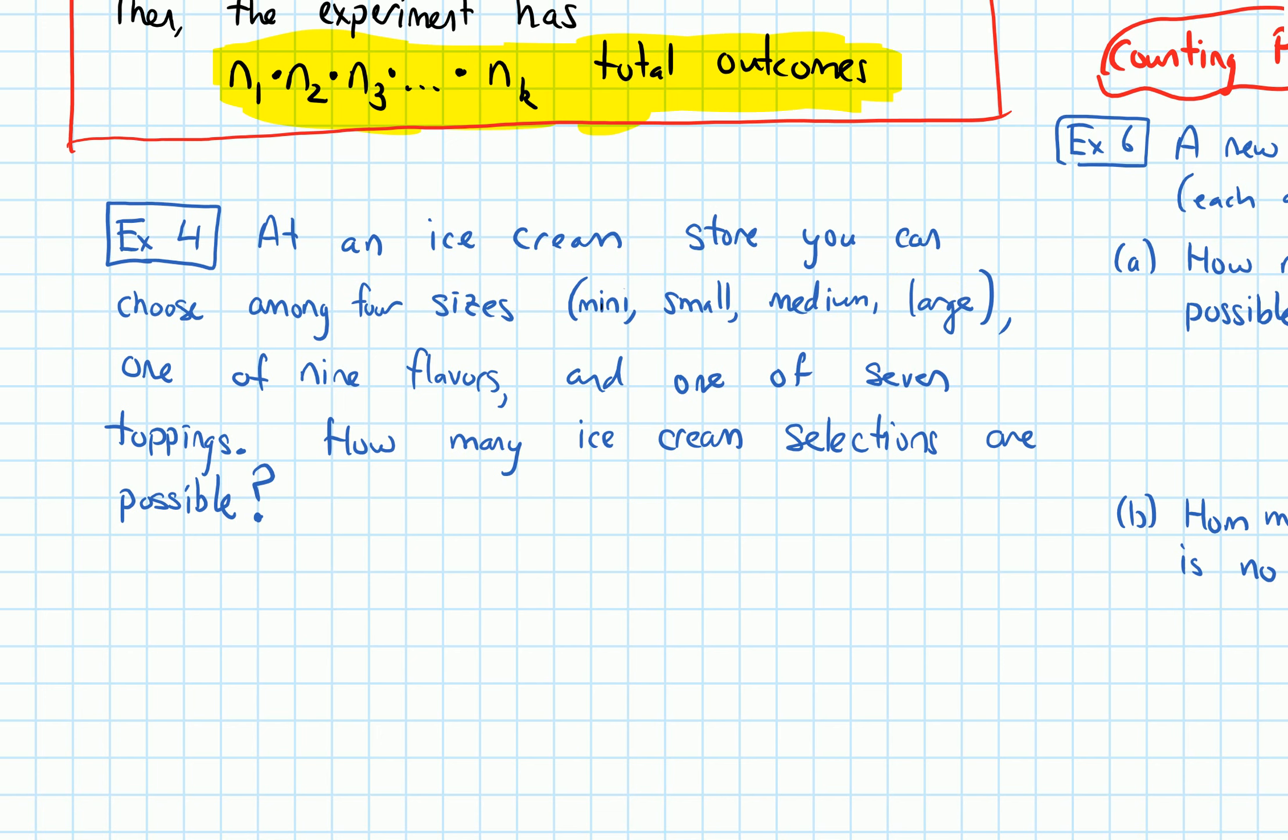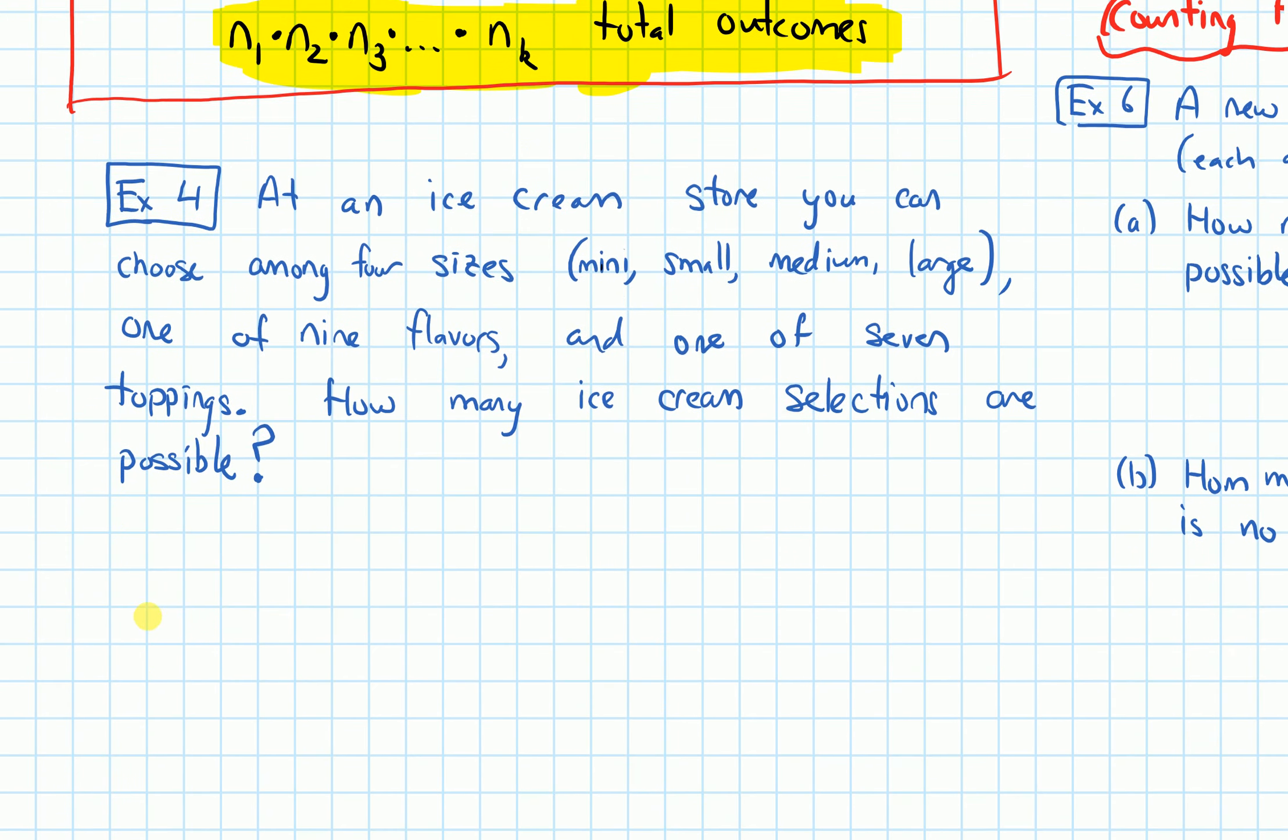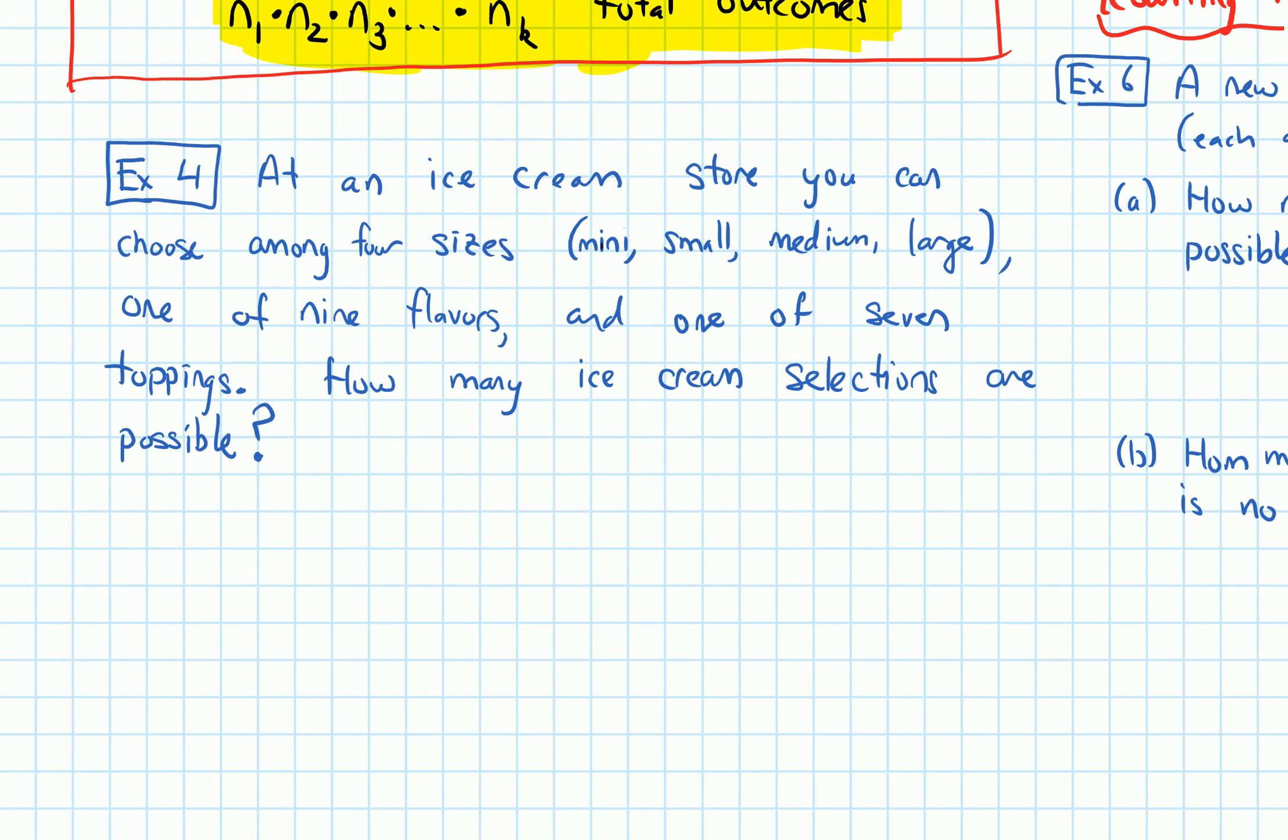How many ice cream selections are possible? So by selection, I mean like the whole combination: size, flavor, and topping. So we want to know the number of ice cream selections, and to determine that we first need to know, I'm going to put a little blank here.